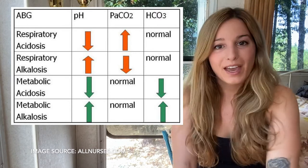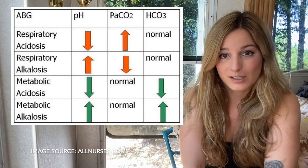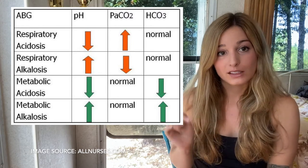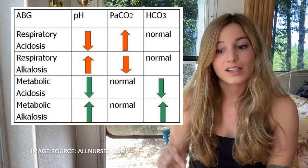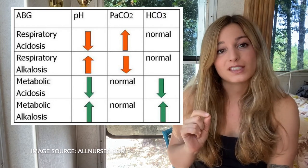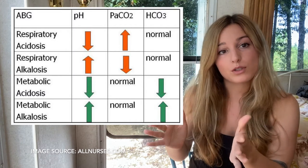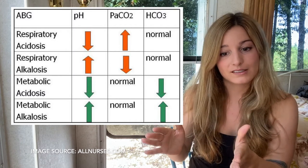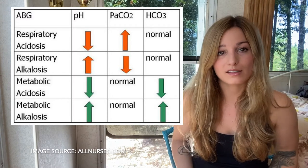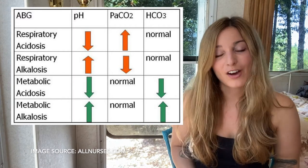Moving into metabolic disorders: metabolic acidosis — the pH is low, under 7.35. The CO₂ is now normal, between 22 and 26, and the bicarb is low. Things that could cause metabolic acidosis include diabetes, shock, and renal failure, amongst others.